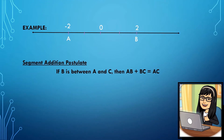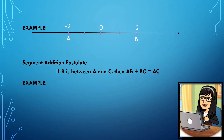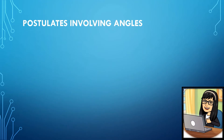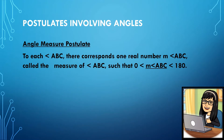Let's have the Segment Addition Postulate. It states that if B is between A and C, then AB plus BC equals AC. If there is no segment bar on top of AB, BC, and AC, we are referring to their lengths. Let's have this figure — we have segment AC, and if B is between them, we can say that the length from A to B added to the length from B to C is just equal to the length from A to C.